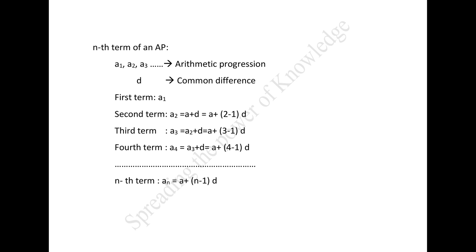The nth term aₙ equals a plus (n minus 1) times d. So, the nth term aₙ of an arithmetic progression with first term a and common difference d is given by aₙ equals a plus (n minus 1) times d. aₙ is also called the general term of the arithmetic progression. If there are m terms in the AP, then aₘ represents the last term, which is sometimes also denoted by l.